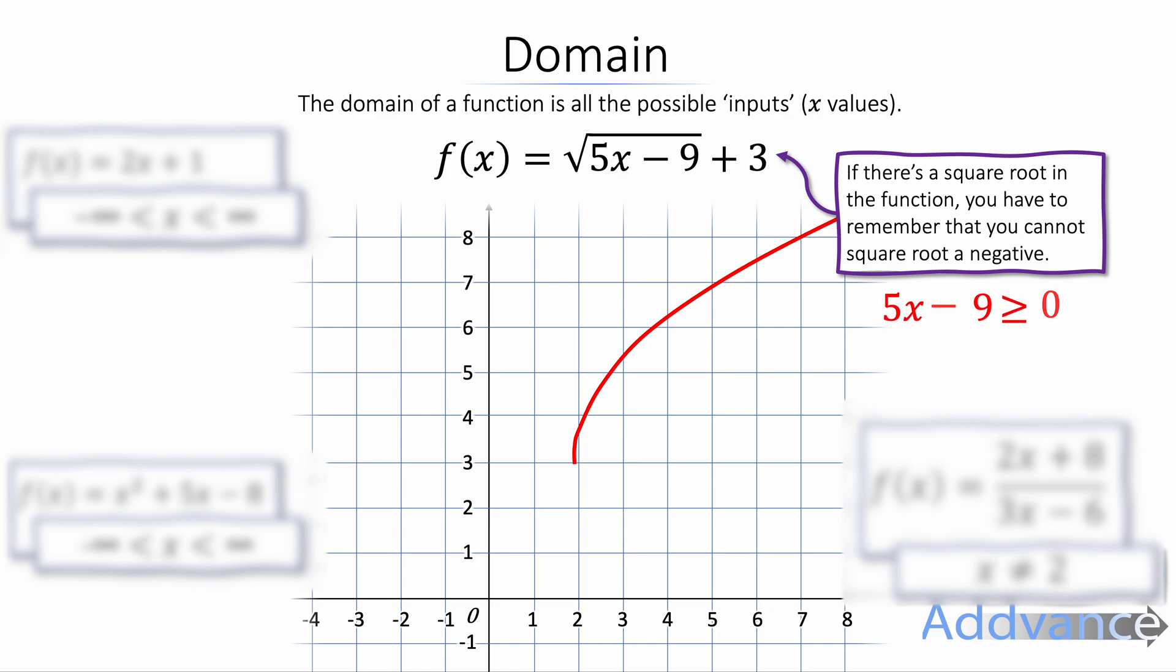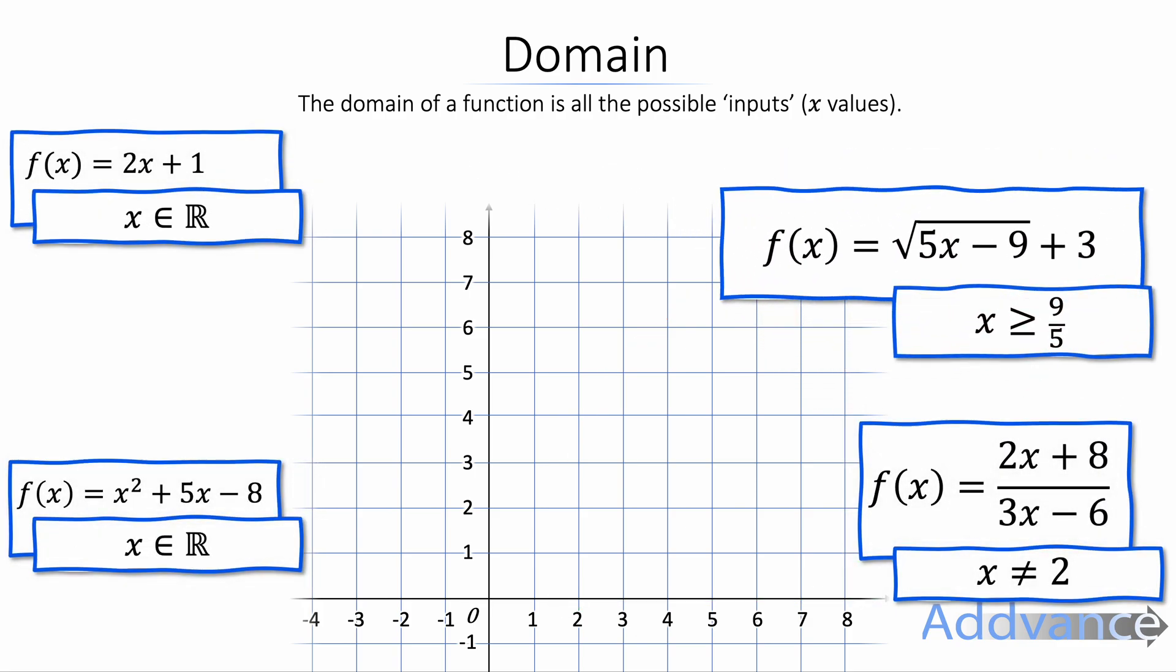We need to solve this. So we add 9 to both sides and we divide by 5. We get x is more than or equal to 9 fifths. And so the domain of this function is x is more than or equal to 9 fifths. And that's just, again, so that the part inside the square root is positive. Because, as I say, inside the square root you cannot have a negative. You can never square root a negative. It doesn't make sense. And so the domain of this function is x is more than or equal to 9 fifths.